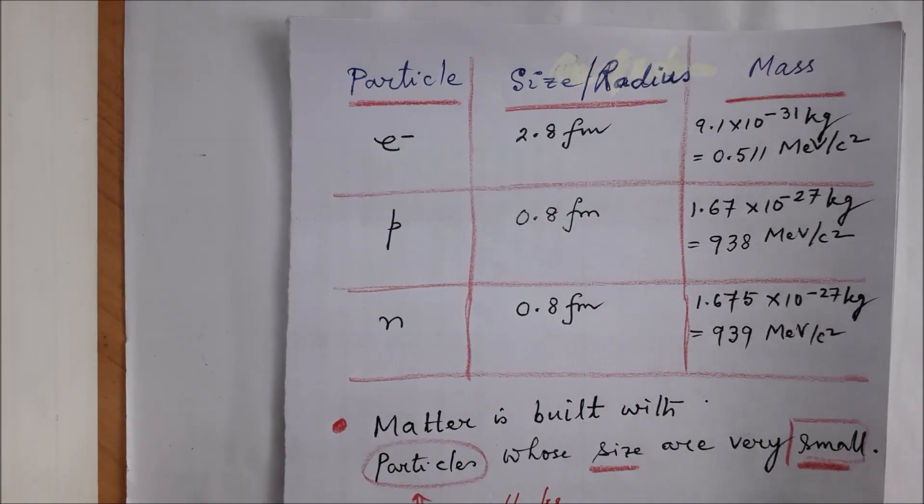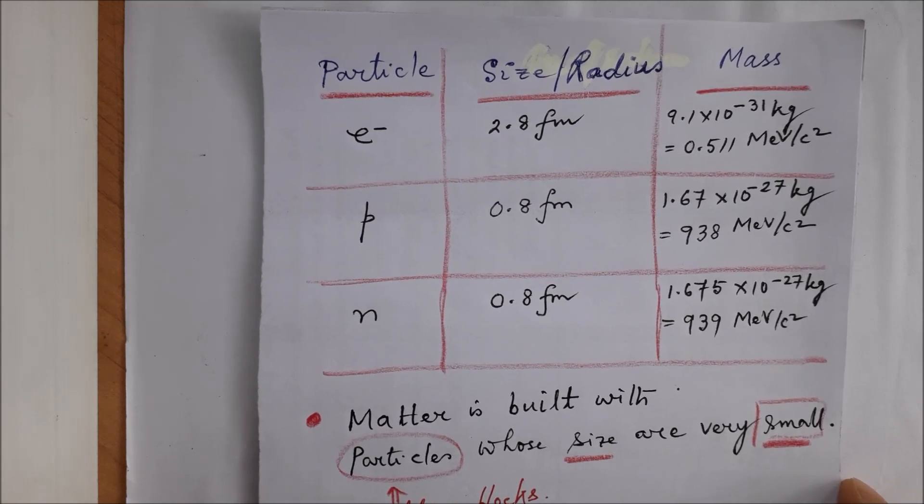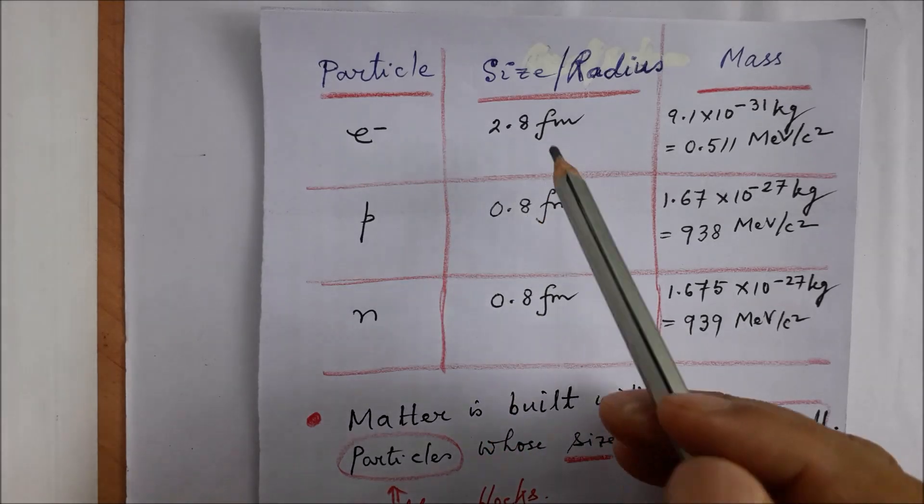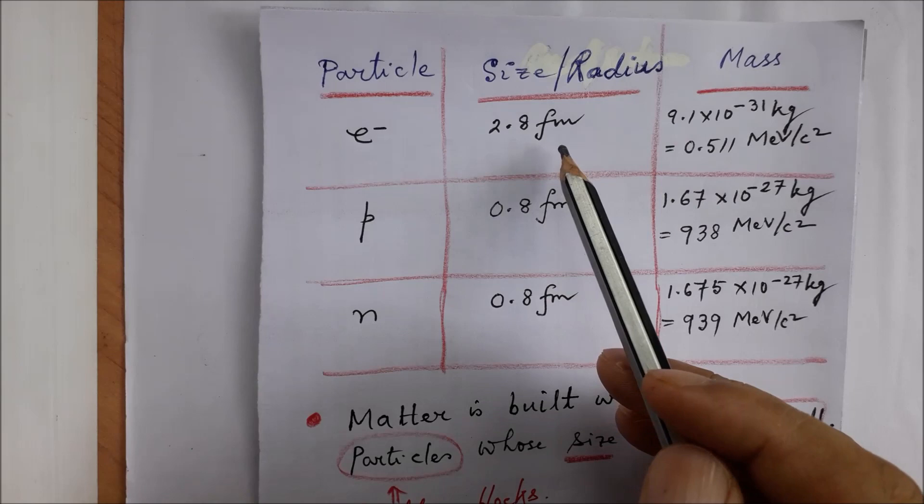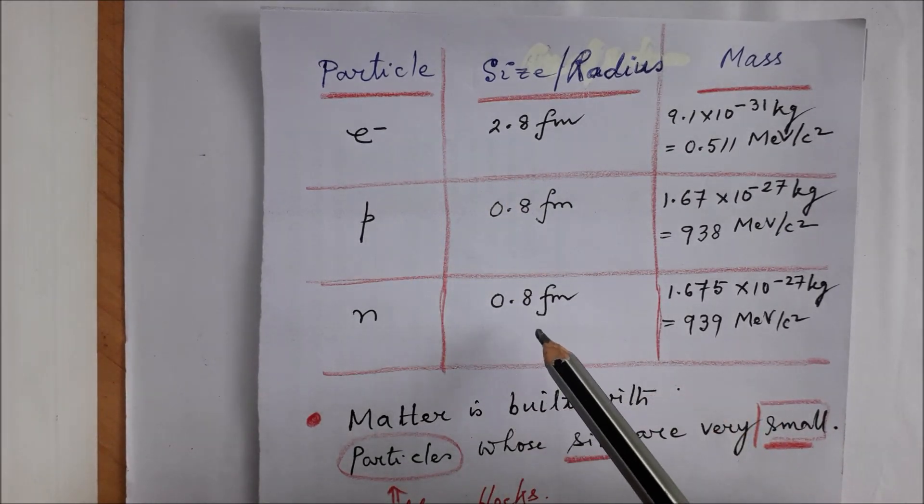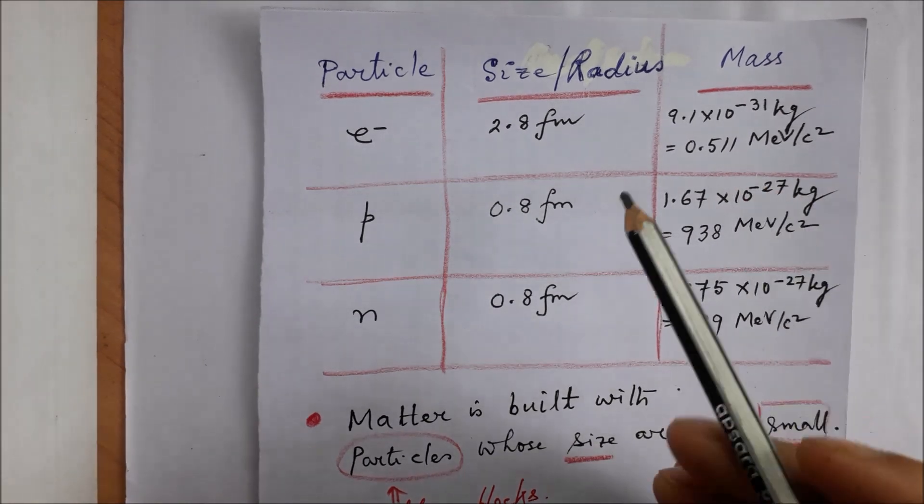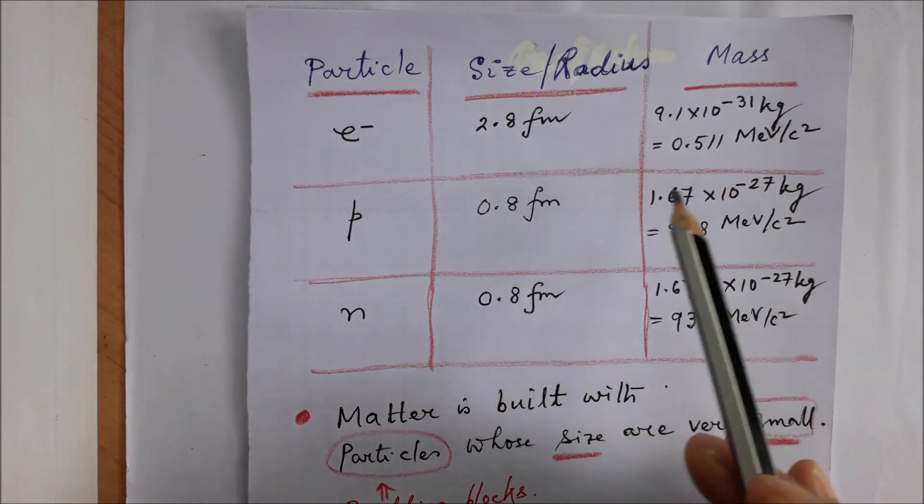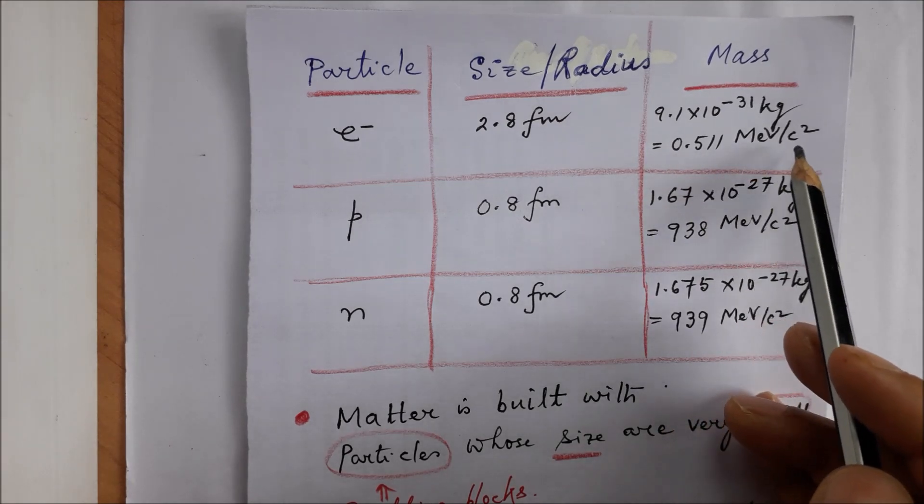This table shows the dimension of these three particles. The radius of electron is 2.8 femtometers. Proton has a radius of 0.8 femtometers, while neutron has a radius of 0.8 femtometers too. The masses are: for electron it is 9.1×10^-31 kg, which comes out to be 0.511 MeV/c².